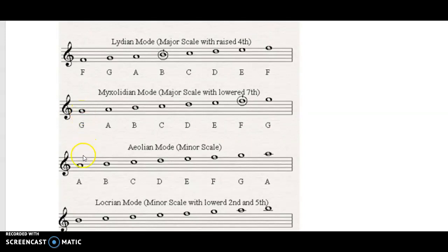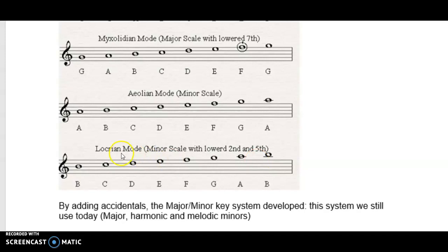Mixolydian is on the 5th. Aeolian is on the 6th — that's the minor scale we know today: A, B, C, D, E, F, G, A — just the minor scale without the raised 7th. And then the Locrian mode starts on the 7th note. That's not a system we know today. I want you to try and play this on the piano, and go on YouTube to listen to some modes. By adding accidentals — naturals, flats, sharps — the major and minor key system developed.